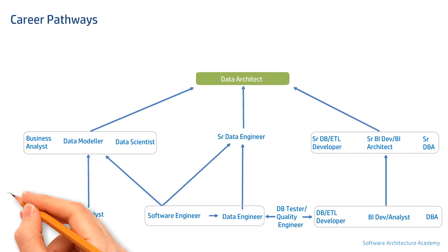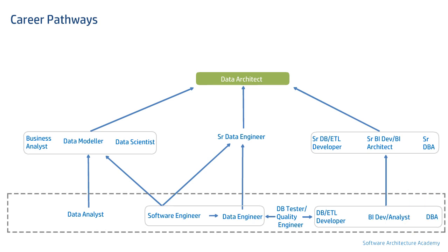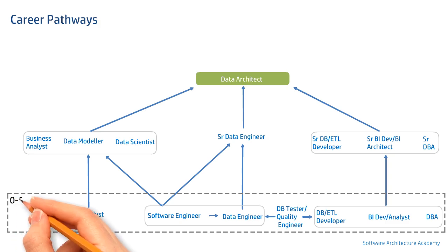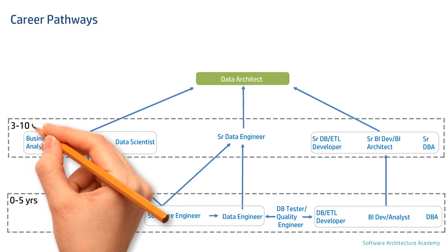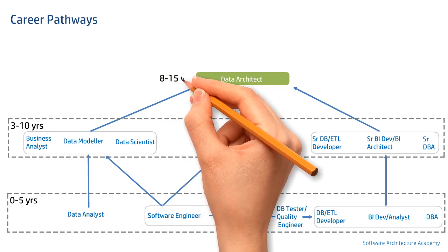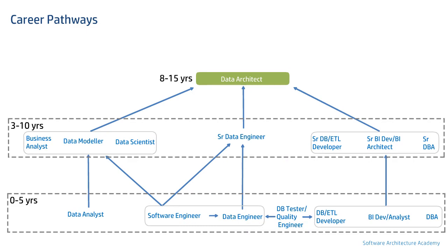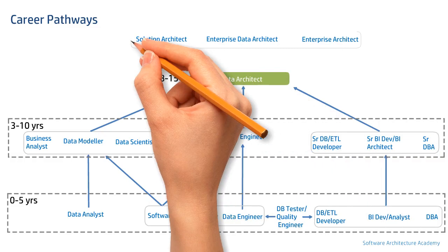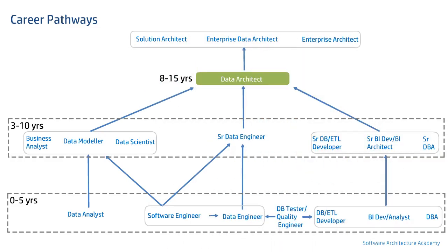Now let's understand the years of experience requirements. The first horizontal section you see is typically zero to three years, with some roles stretching up to five. The next section is usually within the three to eight years experience band, with some roles stretching up to ten. A typical experience band for a data architect would start from eight years if one is able to master the required subject areas early in their career, and it typically continues until fifteen years. Data architects would then often choose to become a solution architect, enterprise data architect, or enterprise architect.